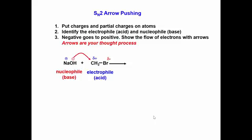Now negative goes to positive. Draw the arrow from the negatively charged oxygen to the partially charged carbon. This shows bond formation between the carbon and the oxygen.